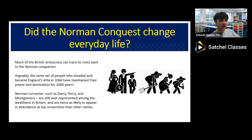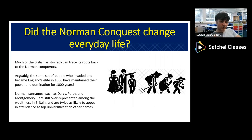You can see this with Norman surnames: classic examples include Darcy, Percy, and Montgomery, which are still over-represented among the wealthiest in Britain and in attendance registers at top universities like Oxford and Cambridge. The families that came over with the Norman conquest — their descendants are still sitting right at the top of our hierarchy in today's Britain, and you can trace this right back a thousand years to 1066.